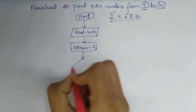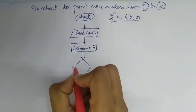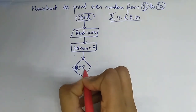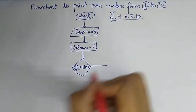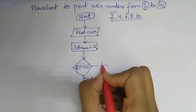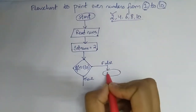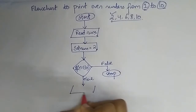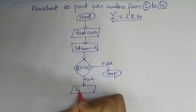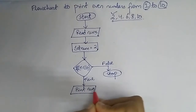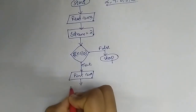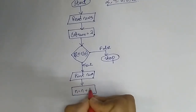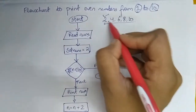Now we have to set the condition: if num is less than or equal to 10. If it is false, the loop will stop. If it is true, it will print num, and then we add 2 — num = num + 2 — because adding 2 each time gives us the next even number.